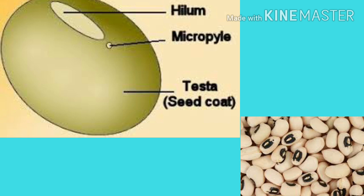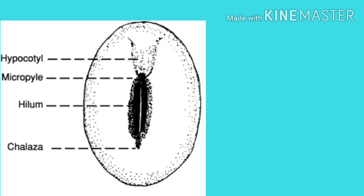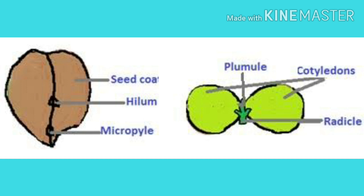There is a small pore called micropyle, which represents the micropyle of the ovule. Some seeds also show the place of origin of seed coats, called chalaza. The seed coat encloses an embryo. The embryo has an axis called tigellum.